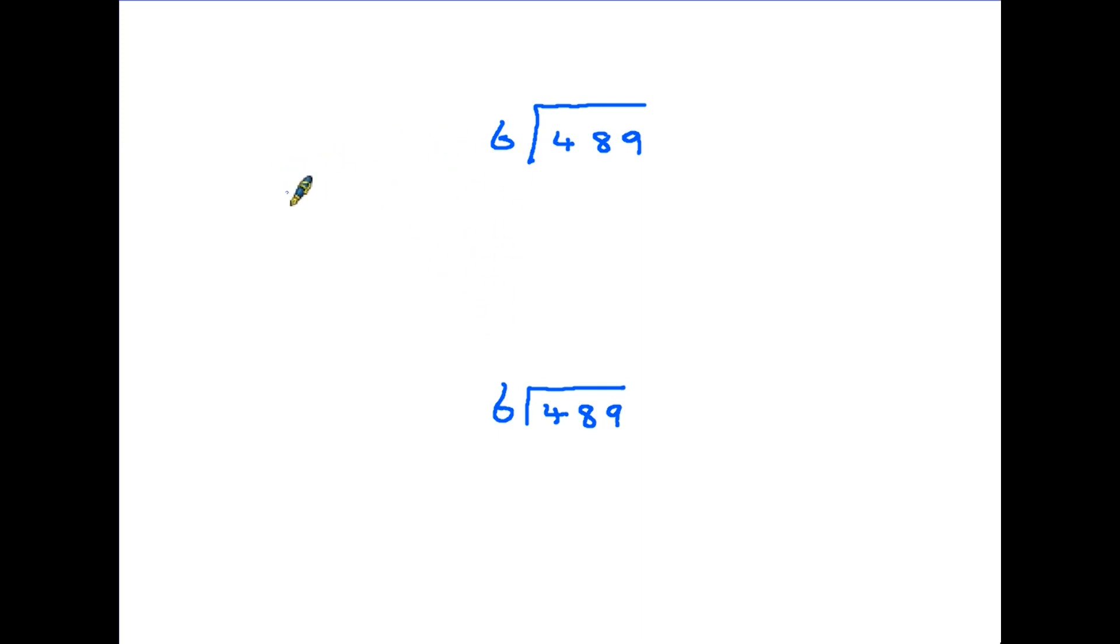Now for our final example, and you'll notice that I've written this out twice because I'm going to give the answer in two different formats. Let's just say for instance that you had 489 sweets and you were dividing them between 6 people, so it would be 489 divided by 6. Let's do that. So the first thing we would say is how many sixes are there in 4?